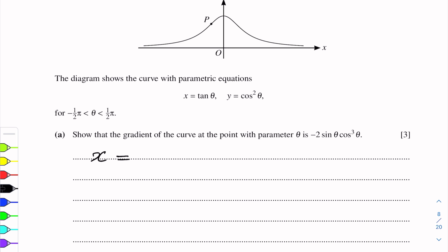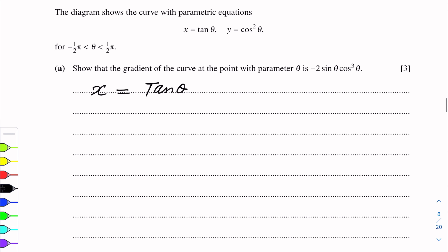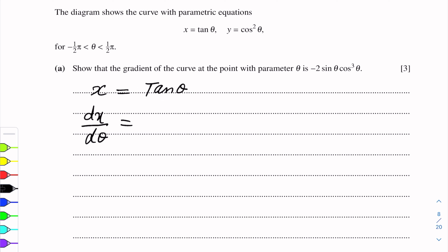x is equal to tan theta. Differentiating with respect to theta, we get dx over d theta is equal to the differentiation of tan theta, which is sec squared theta. Note that sec squared theta is the reciprocal of cos squared theta.